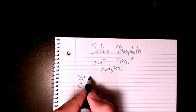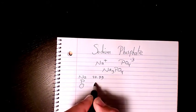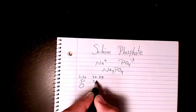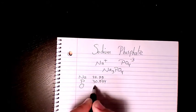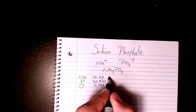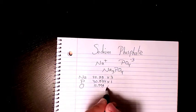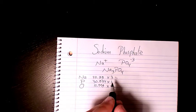The atomic mass of sodium is 22.99, phosphorus is 30.974, and oxygen is 15.999. Sodium we have three of them, phosphorus we have one, and oxygen we have four of them.